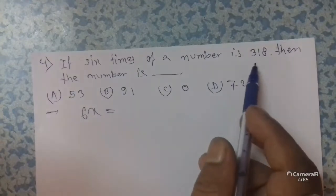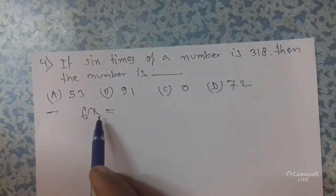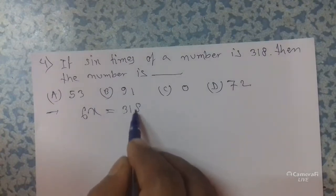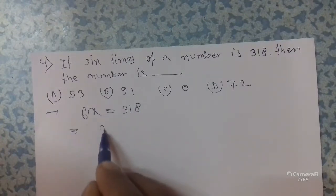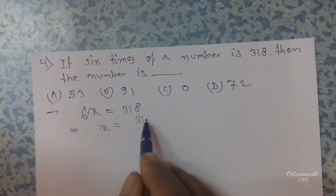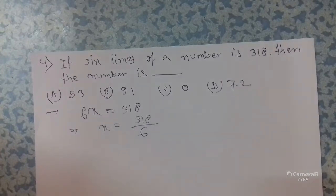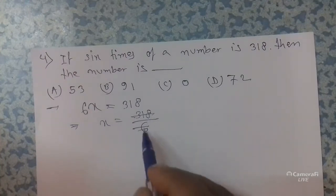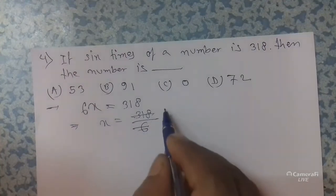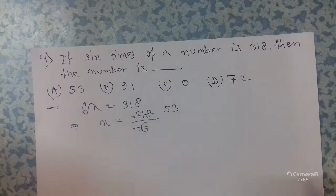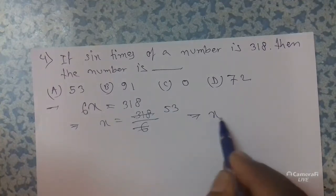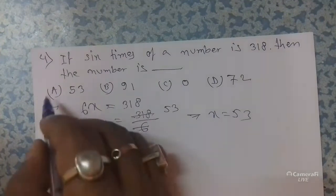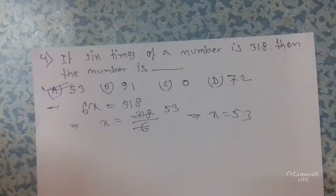The result is 318. So 6 times a number is 318, which means 6x = 318. Now calculate: x = 318 divided by 6. If we divide 318 by 6, it will be 53. Therefore x = 53, so option A is the correct answer.